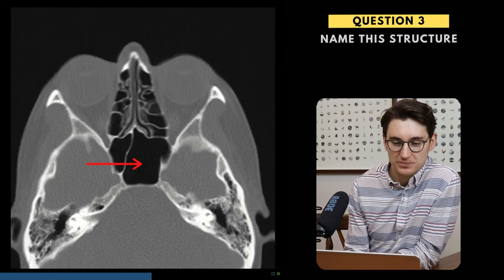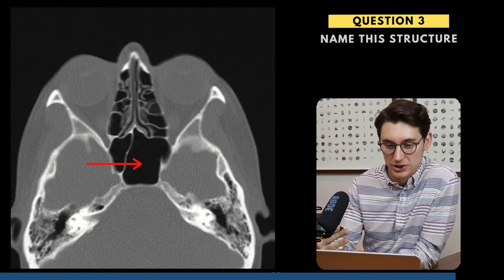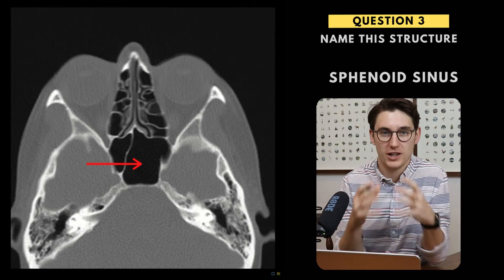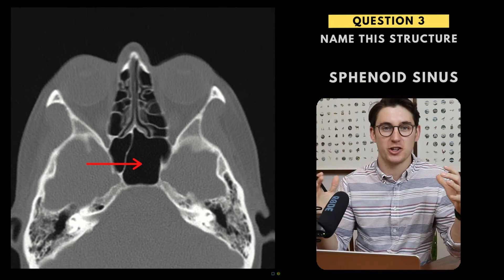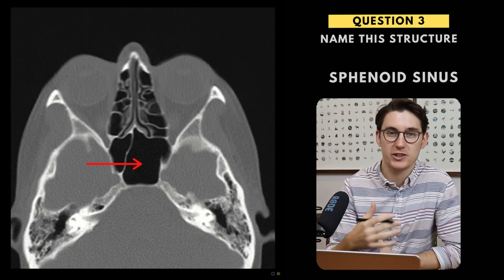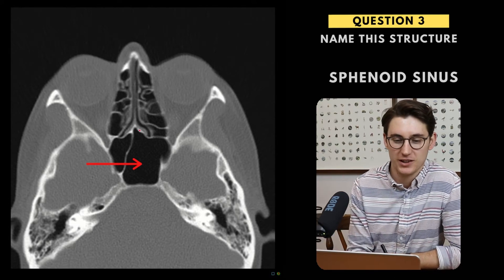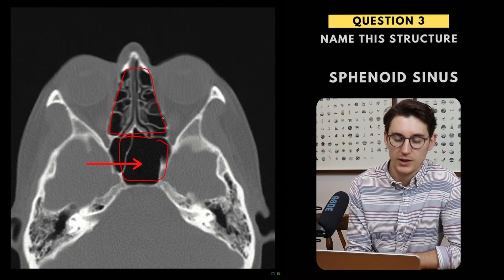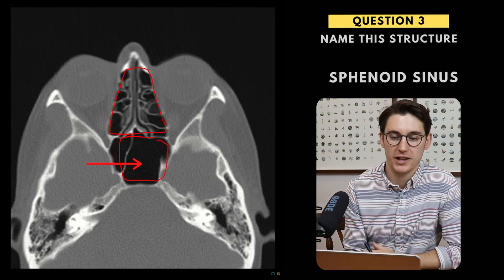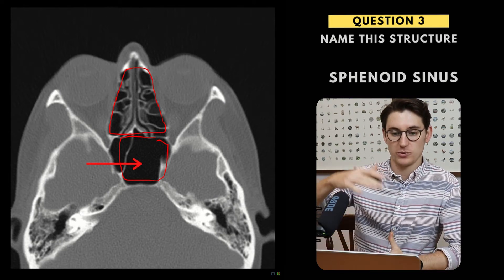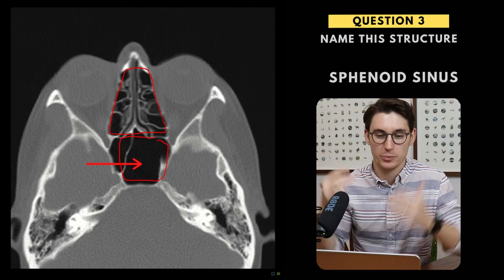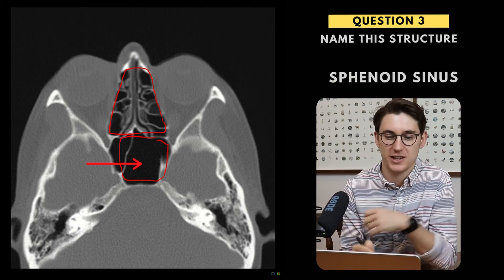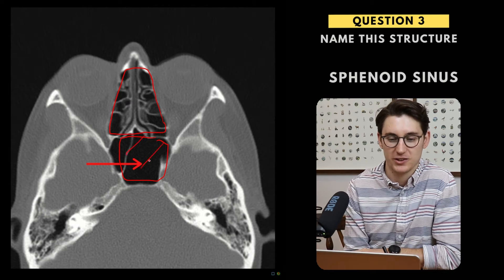Question three — we're asked to label this structure. What we have here is the sphenoid sinus. The sphenoid sinus is part of a group of four sinuses under the umbrella term paranasal sinuses. The sphenoid sinus is the most posterior sinus. In front of it we've got our ethmoid sinuses. Going more inferiorly below the orbits, we would have our maxillary sinuses. And going more superior and anterior, we have our frontal sinuses. So we've got four groups of paranasal sinuses, and the one we're asked to label here is the sphenoid sinus.